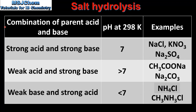Let's end the video with a summary. In this table we have the combination of parent acid and base, the pH at 298K, and some examples. The salt formed by the reaction of a strong acid and a strong base will have a pH of 7 at 298K; examples of neutral salts include sodium chloride and potassium nitrate. The salt formed in the reaction between a weak acid and a strong base will have a pH greater than 7 at 298K; an example of a basic salt is sodium ethanoate. The salt formed in the reaction between a weak base and a strong acid will have a pH less than 7; an example of an acidic salt is ammonium chloride.